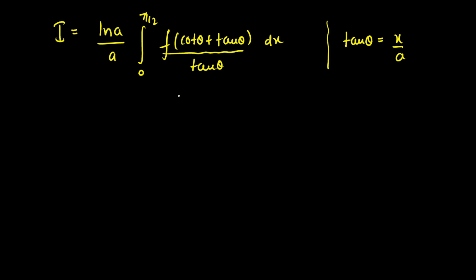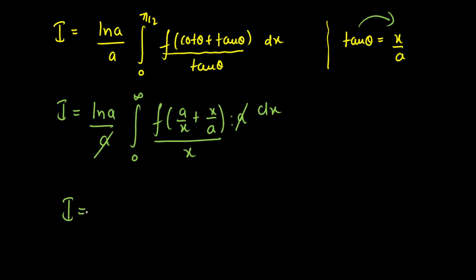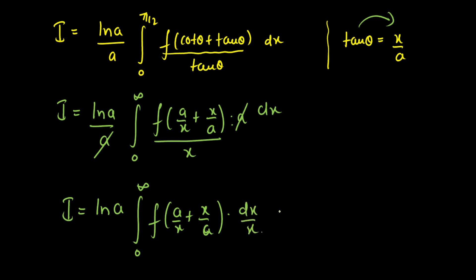Converting the limits back from θ ∈ [0, π/2] to x ∈ [0, ∞), tan(θ) = x/a gives cot(θ) = a/x and tan(θ) = x/a. The a's cancel, giving I = ln(a) · ∫₀^∞ f(a/x + x/a) · (1/x) dx. We have proved that LHS equals RHS as given initially. Thank you.